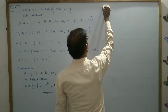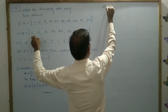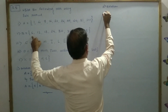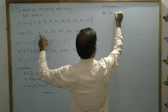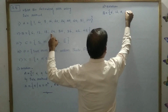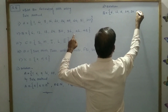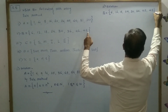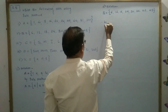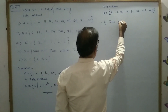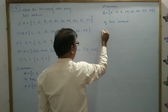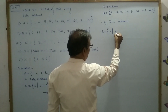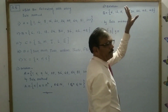Second problem: B is equal to 6, 12, 18, 24, 30, 36, 42, 48. By rule method, therefore B is equal to — suppose Y is variable. Y is such that Y equals these multiple numbers. Multiple means that is the table of 6.